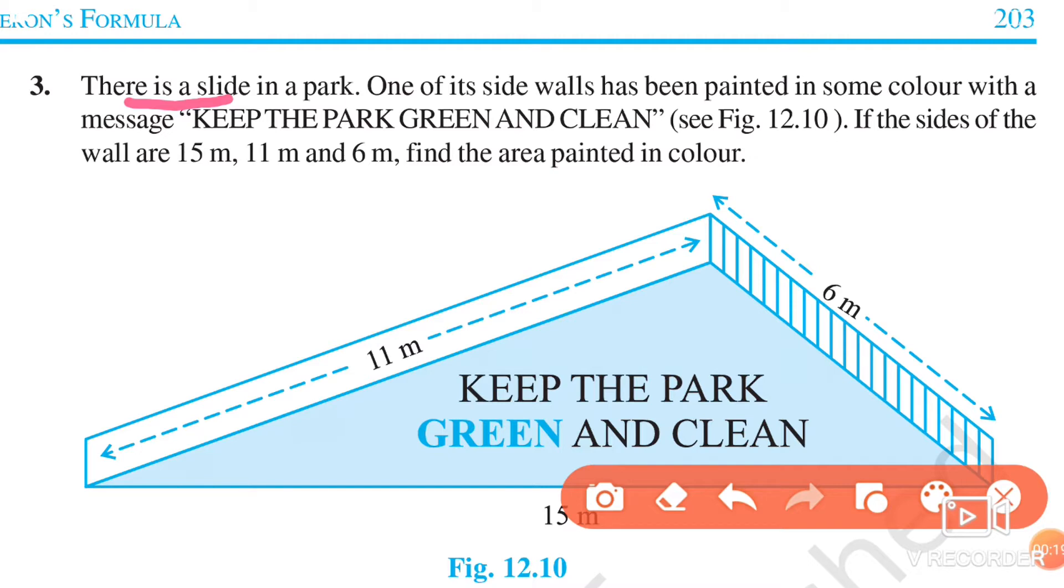If the sides of the wall are 15 meters, 11 meters, and 6 meters, find the area painted in color. What we have given is a wall of a park which is triangular shape.